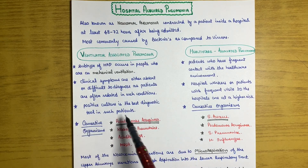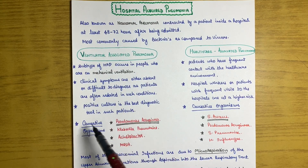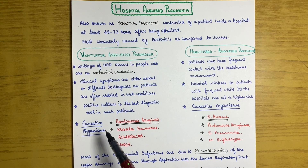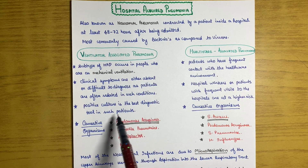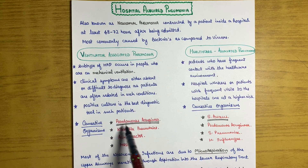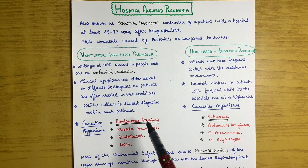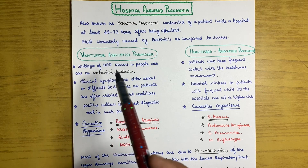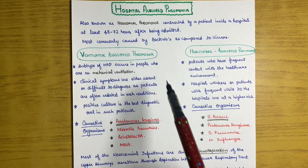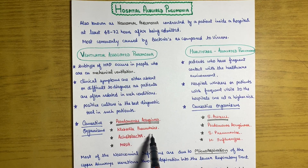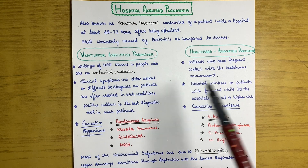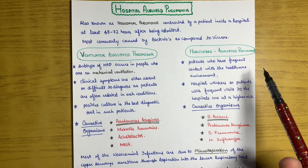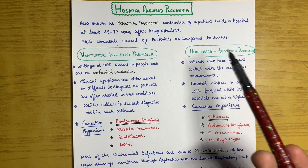Positive culture is the best diagnostic tool in such patients. The causative organisms for ventilator-associated pneumonia are most commonly Pseudomonas or Acinetobacter, which is the most common culprit. It can also be caused by Klebsiella pneumoniae, Acinetobacter, or MRSA.